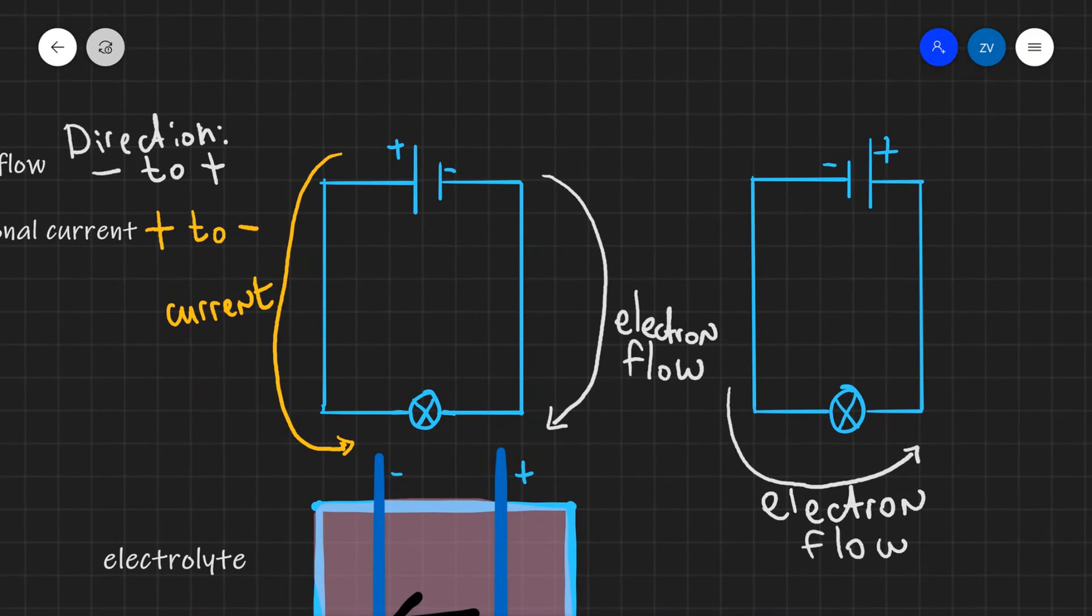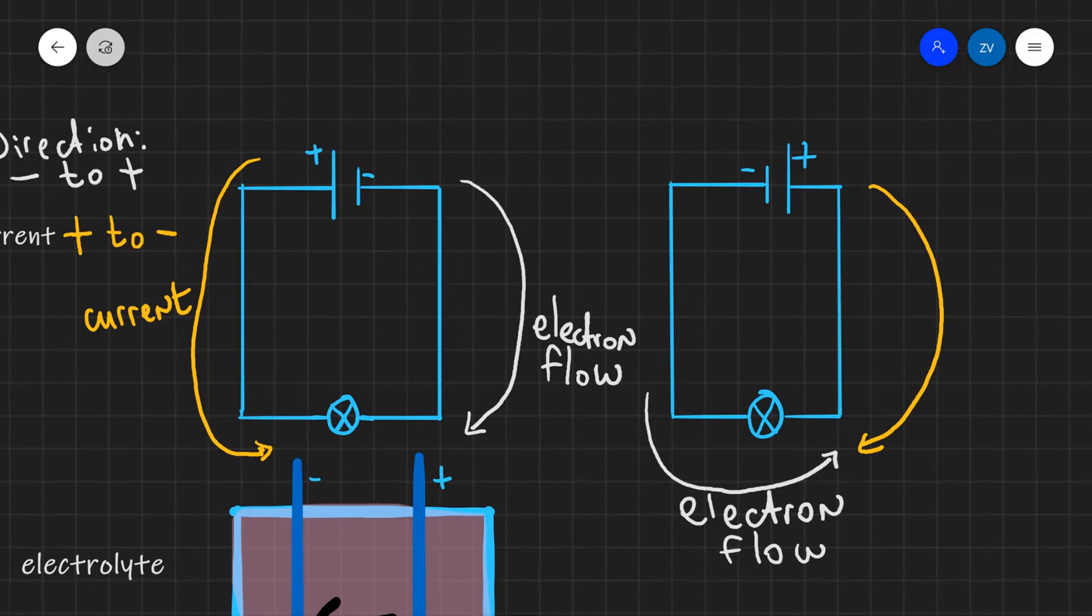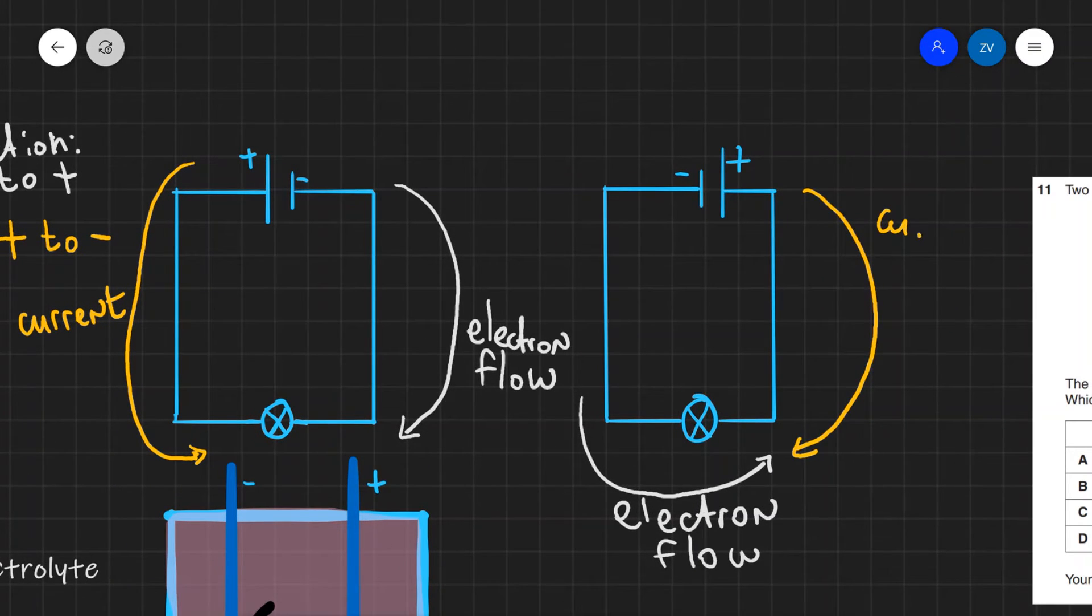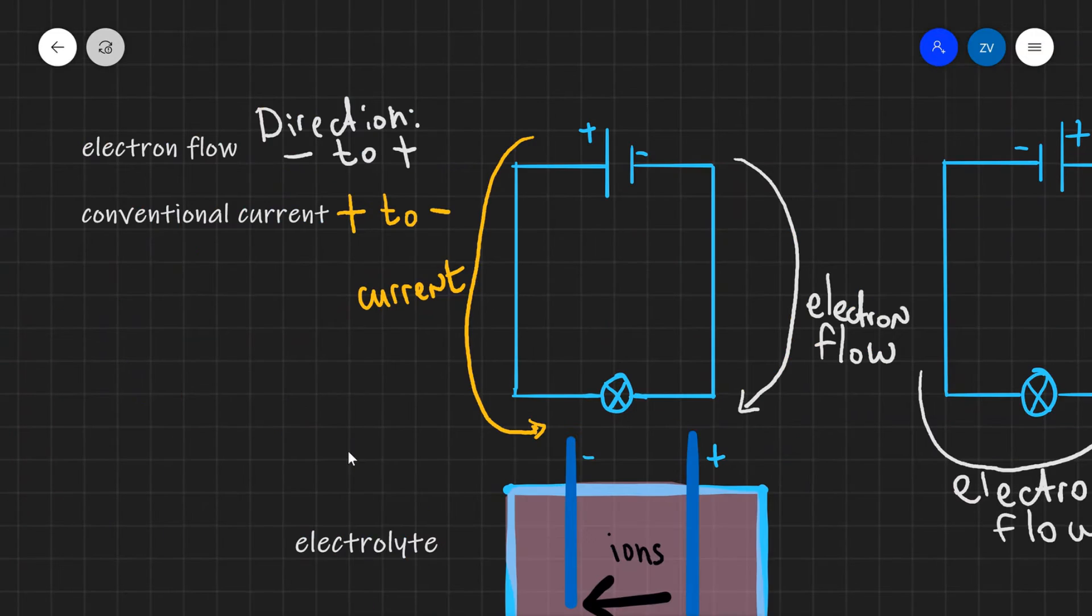In this case over here, once again, the electron flow is in the opposite direction to the conventional current, which would be going this way. So let's write that down as current. So once again, just to summarize, electron flow goes from negative to positive, whereas conventional current moves from positive to negative.